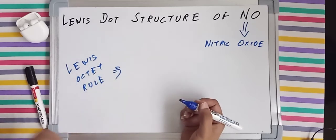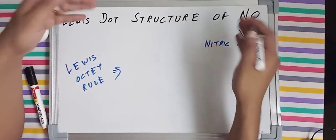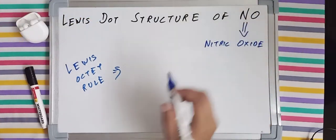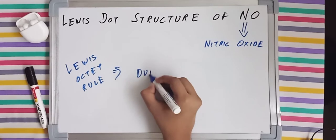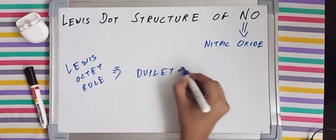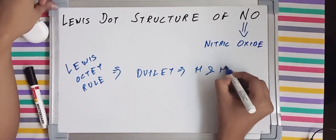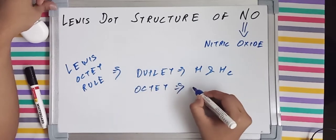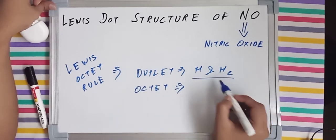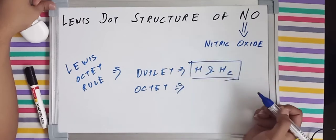This rule states that every atom present in a molecule wants to complete its duplet or octet. Duplet for hydrogen and helium, whereas octet for all the other elements except these two, because these two just have 1s subshell in their outermost shell.